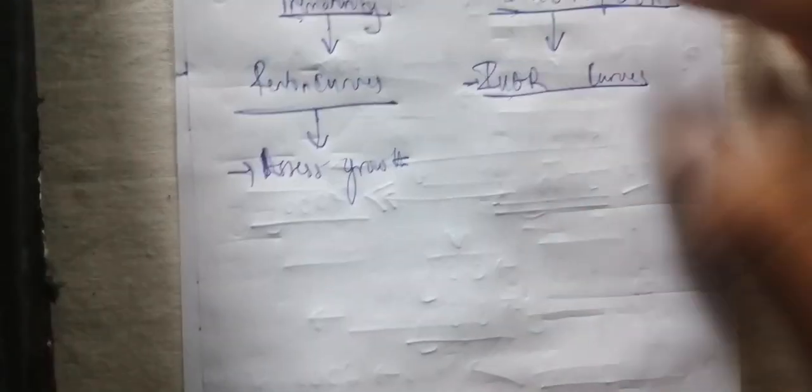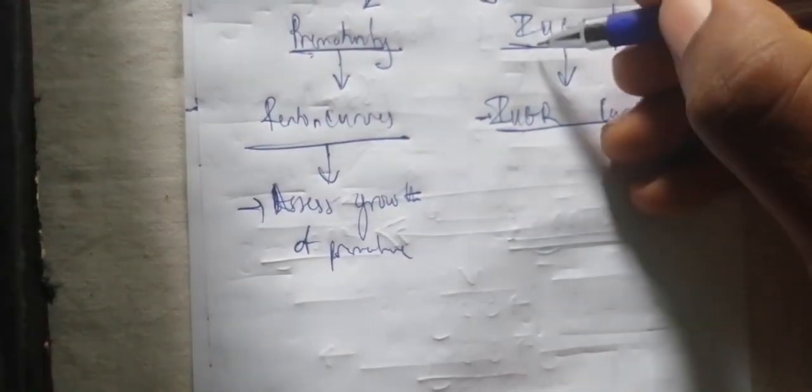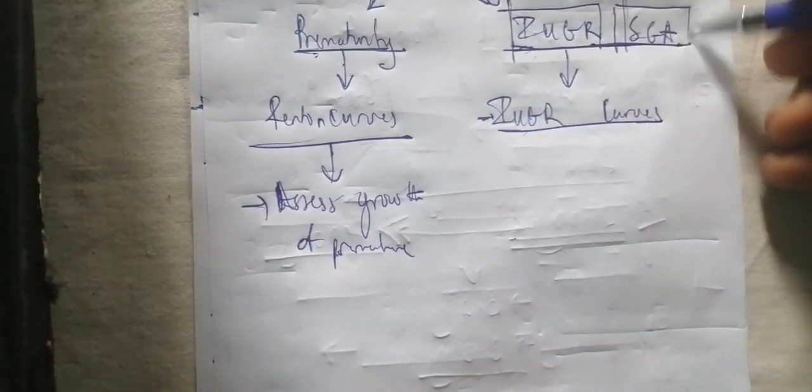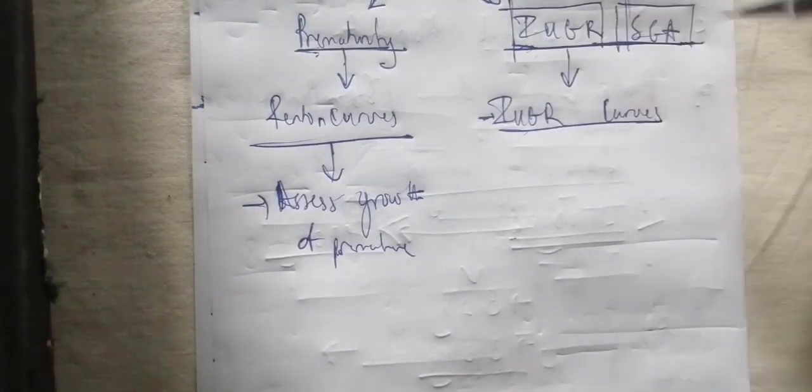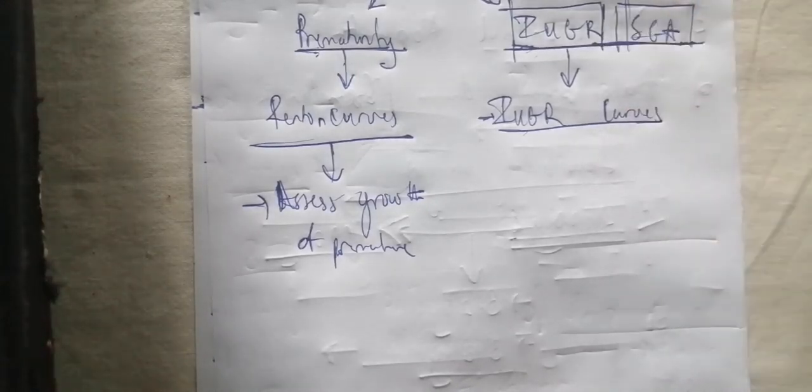To evaluate for intrauterine growth restriction, you need to use intrauterine growth restriction curves, which are different from the Fenton curves. The Fenton curve is used to assess the growth of a premature infant, while the intrauterine growth restriction curves are used to assess for intrauterine growth restriction or small for gestational age. Note that intrauterine growth restriction refers to the fetus, while small for gestational age refers to a living child.